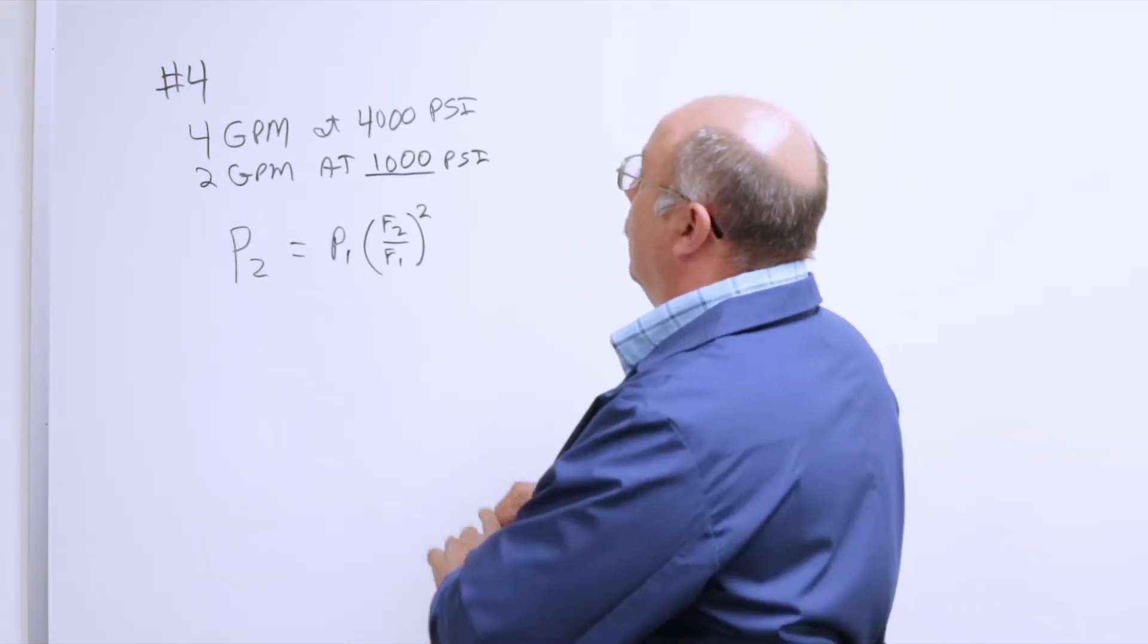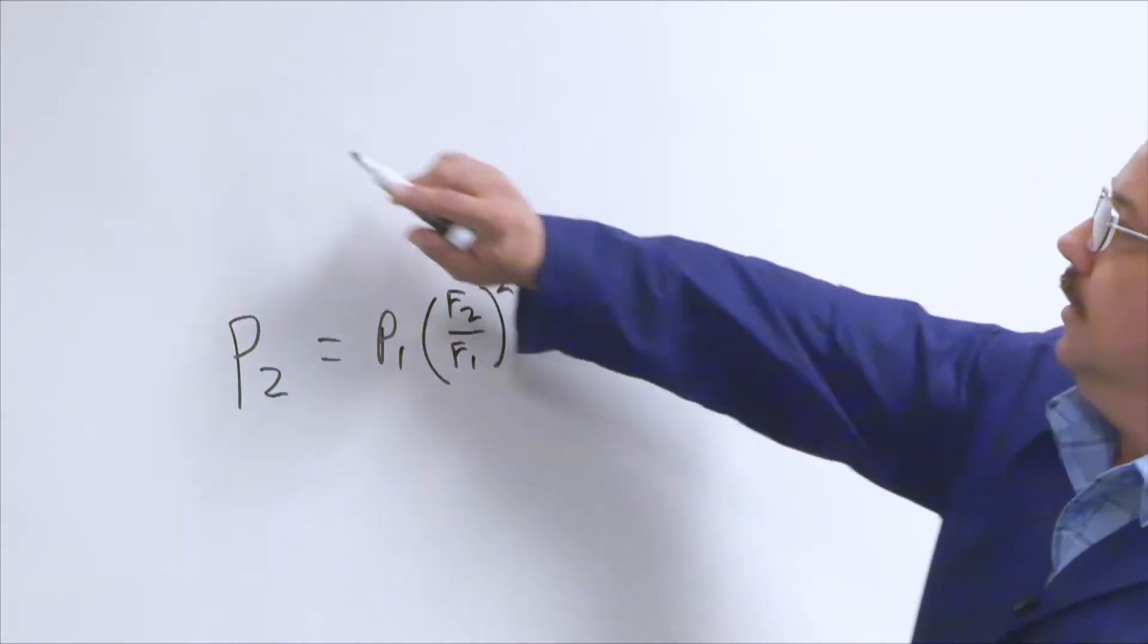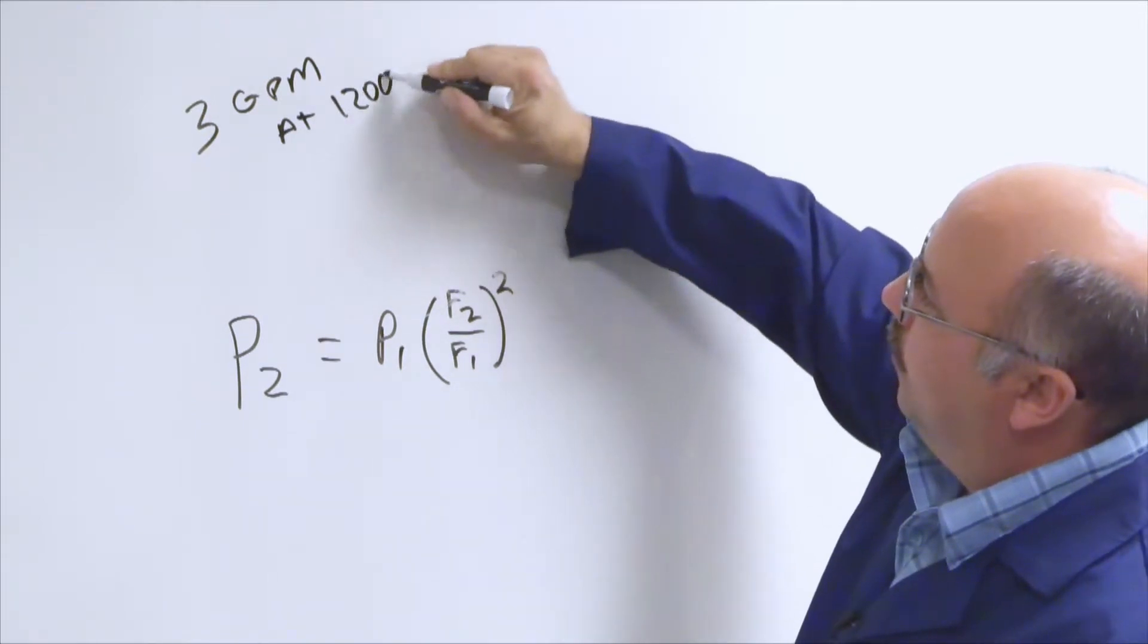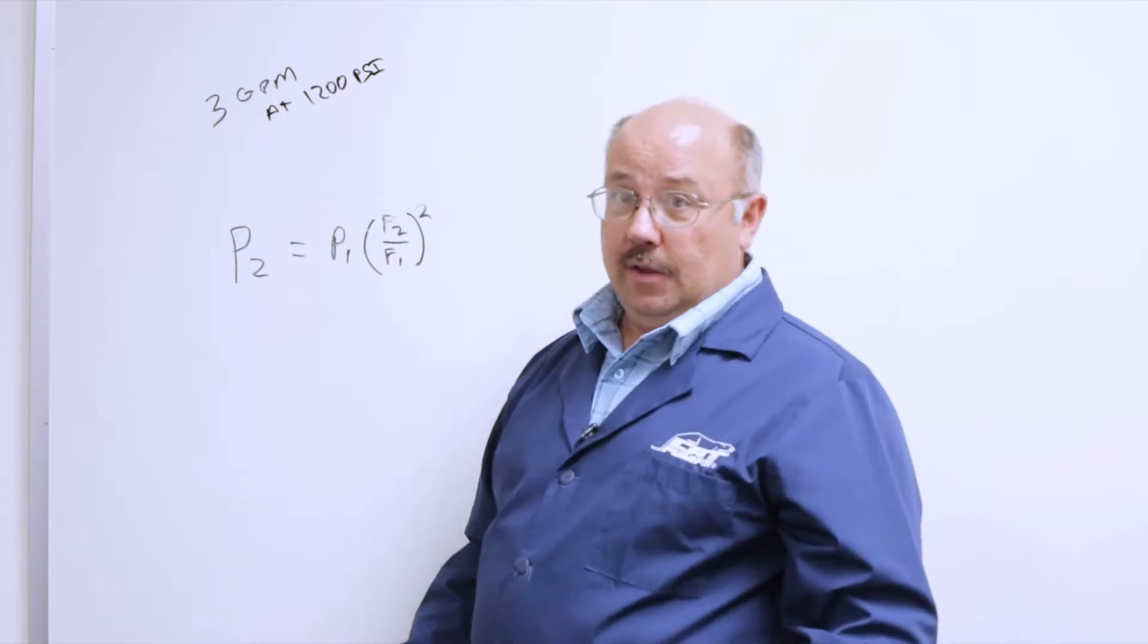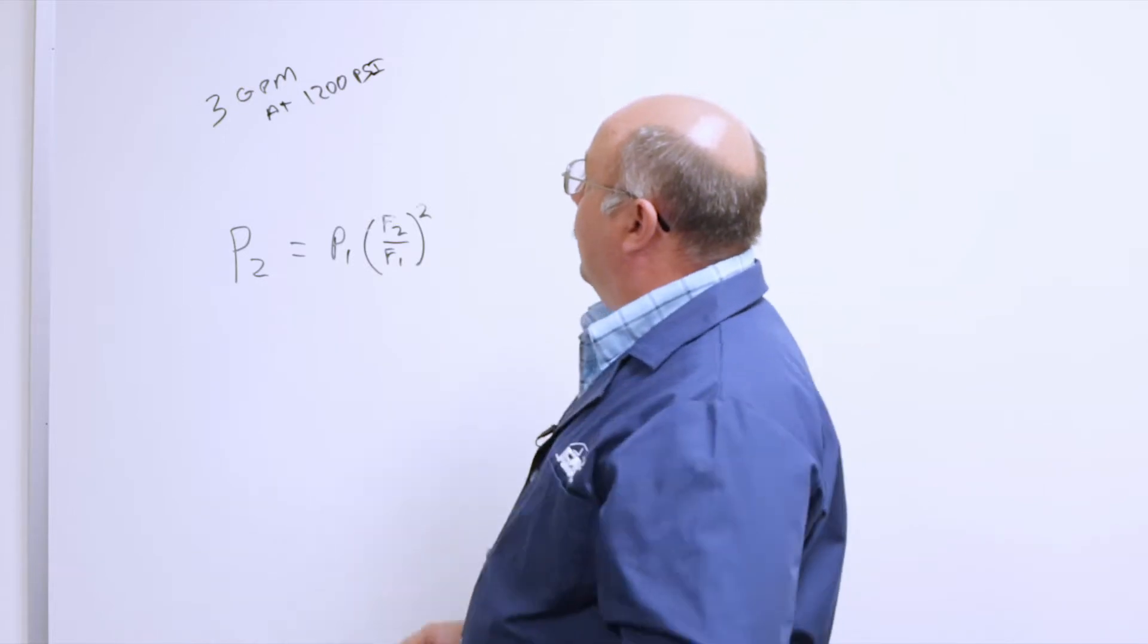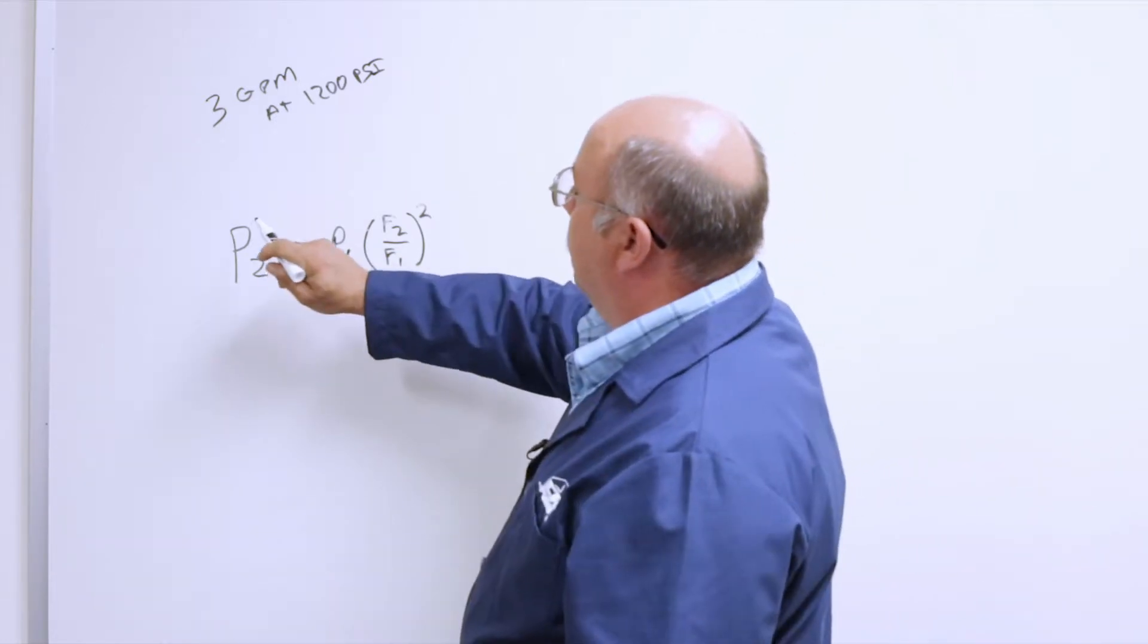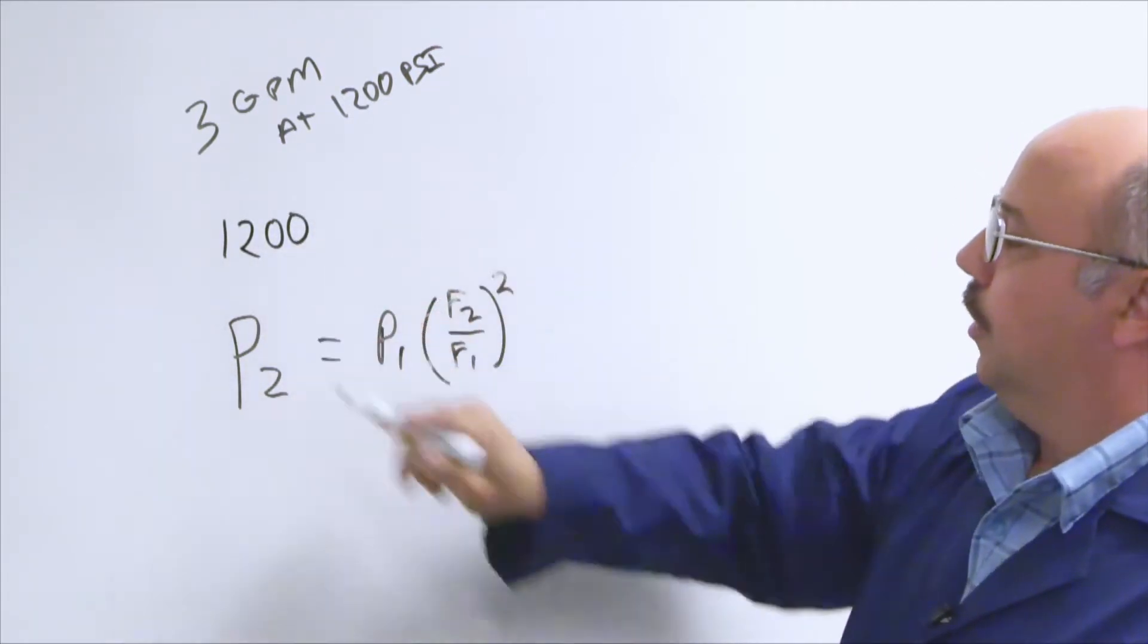So we can use this formula to calculate what flow we need in a system. An example of that is we have a system that is 3 GPM at 1,200 psi. So now the question is, what nozzle do I use for this system? It's not very intuitive because nothing rounds very well with 4,000 psi. So we're going to throw the numbers at the formula and see what shakes out.